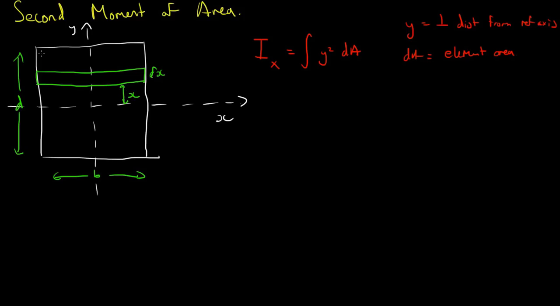I've drawn a rectangle here of width b and height d. I've arranged it on a pair of axes such that the centroid of the rectangle is at 0, 0. I've also highlighted an elemental strip of this rectangle of width b and height delta x, which is a distance x from the axis. Now I can apply this formula to the shape in order to get the second moment of area of this rectangle.